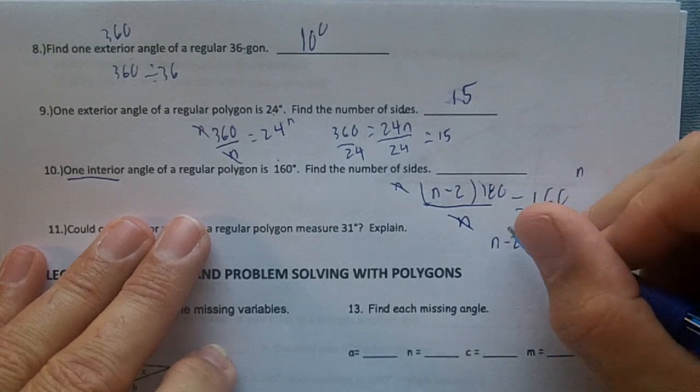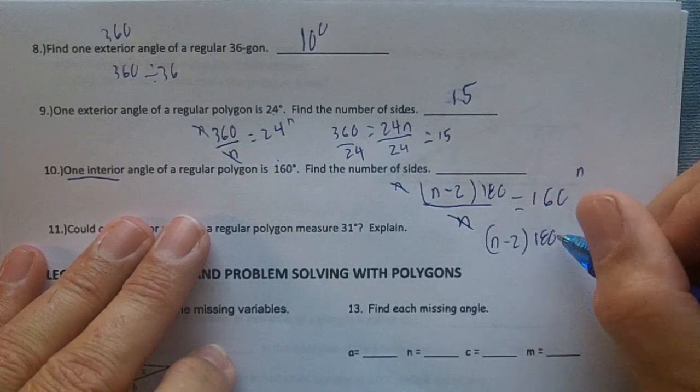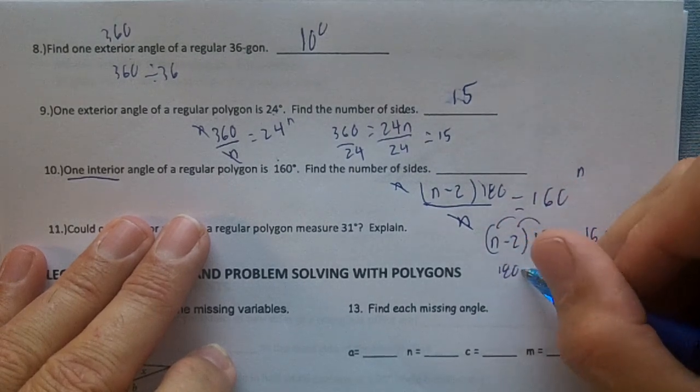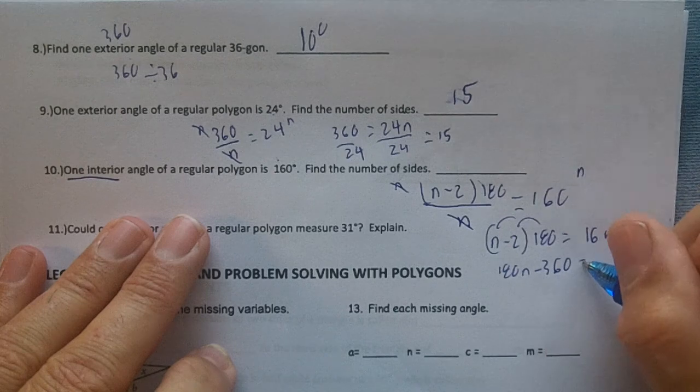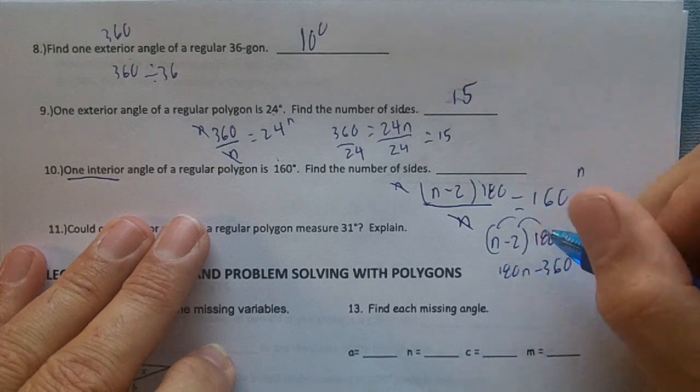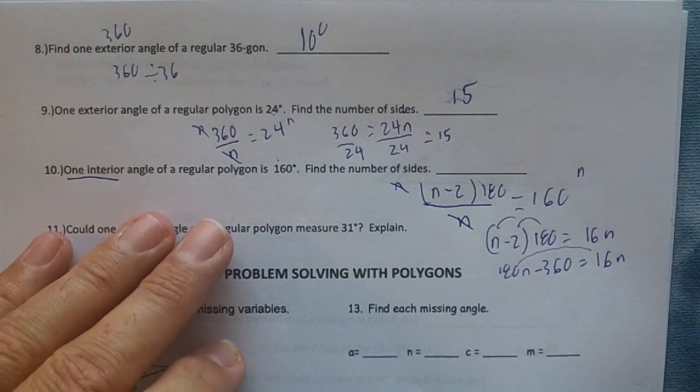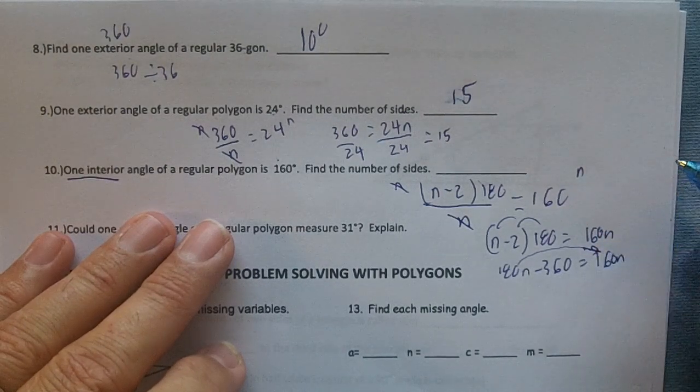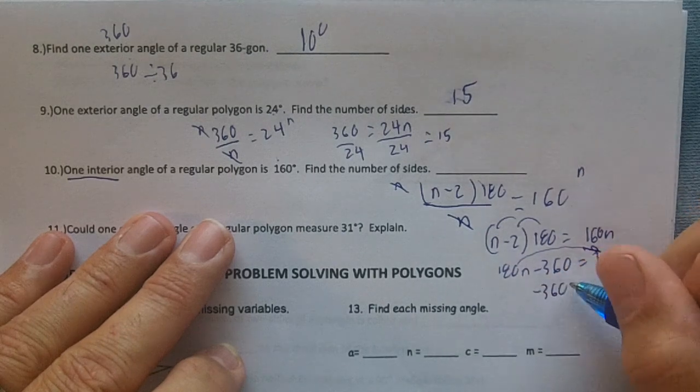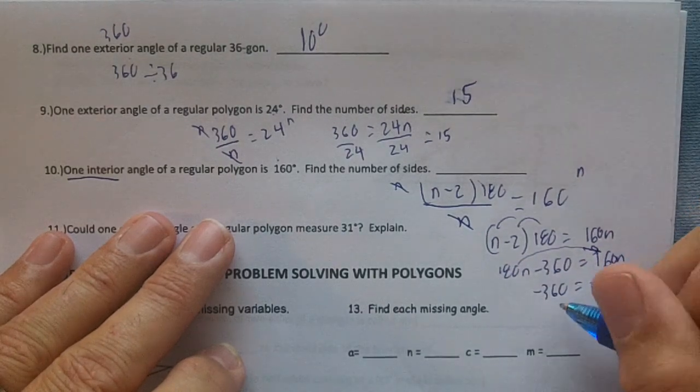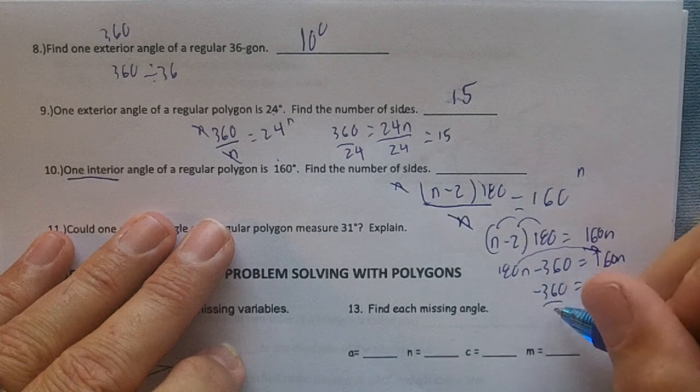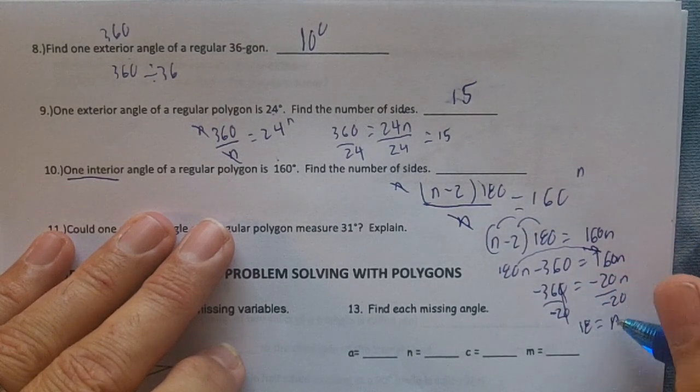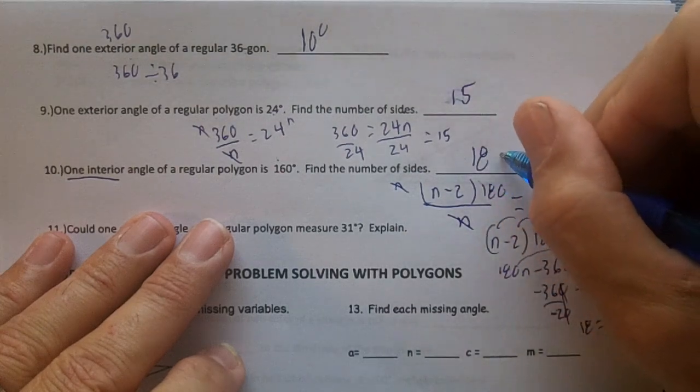So I'm going to have n minus 2 times 180 equals 160n. Distribute the 180. 180n minus 360 equals 160n. I'm going to move my 160n over, then move my 180 over. So I'm going to get negative 360 equals negative 20n. Divide by negative 20. And you would get 18 equals n. So 18 sides.